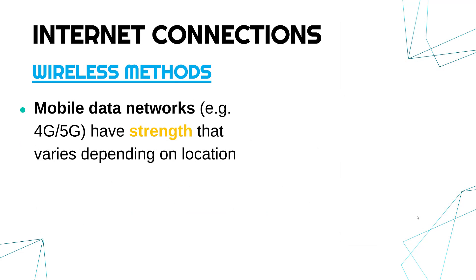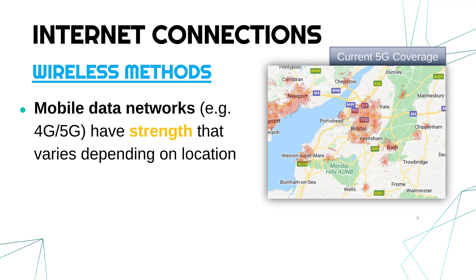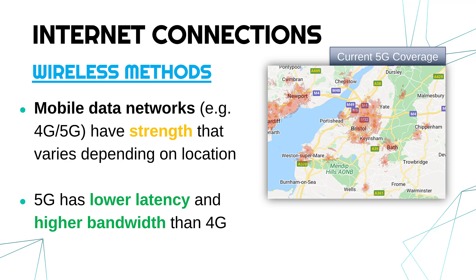Moving on to wireless methods — if you have mobile data you are connecting to the internet via a cellular network. 4G and 5G are examples of services provided by a mobile data network. These are separate from Wi-Fi but they provide access to the internet. The strength really depends on where you are, as you will know from experience. 4G and especially 5G strength can vary quite a lot as you move about. Here is a map of 5G coverage near Bristol and Wales — you can see 5G in some towns but not elsewhere. 5G is better than 4G because it's got lower latency and higher bandwidth — you can send more things at once using 5G, and both contribute to it being faster.